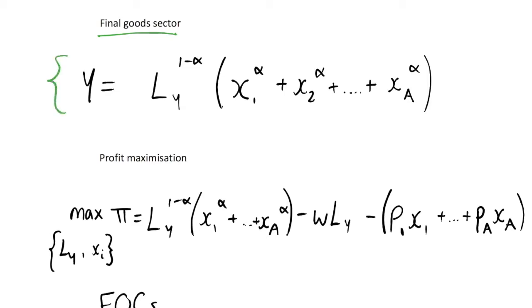So what we begin with in the final goods sector is we have a production function, and we have our output here which is governed by this Y parameter.